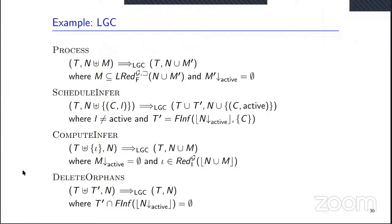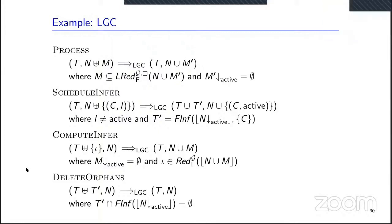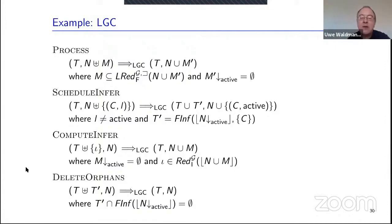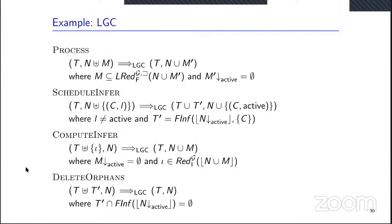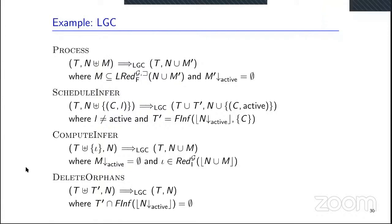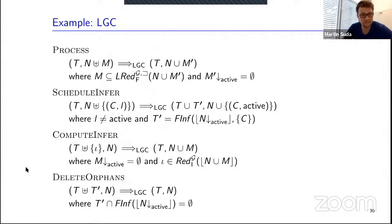A follow-up question asked whether conclusions of potential orphans could be used for simplifications. The speaker confirmed that if you postpone computing an inference, you cannot use its conclusion for simplification; to use it you must compute the inference first. There was brief discussion of approaches that mark clauses used for simplification. The session was then closed, with thanks to Uwe for an interesting talk.